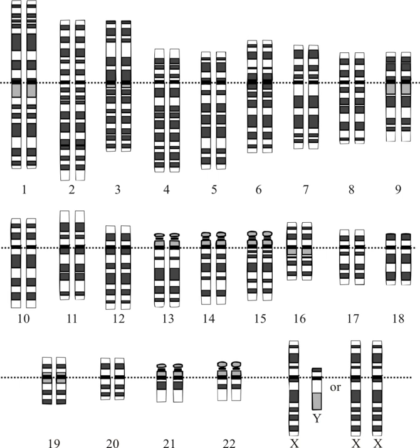Whereas a genome sequence lists the order of every DNA base in a genome, a genome map identifies the landmarks. A genome map is less detailed than a genome sequence and aids in navigating around the genome. An example of a variation map is the HapMap being developed by the International HapMap Project.